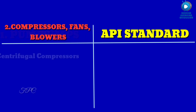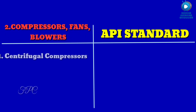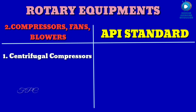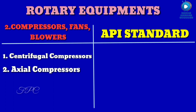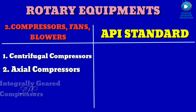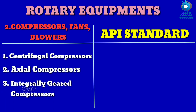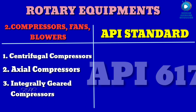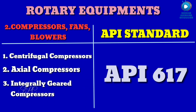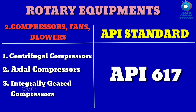For compressors: number one, centrifugal compressors; number two, axial compressors; and number three, integrally geared compressors — all are under the same API standard 617.